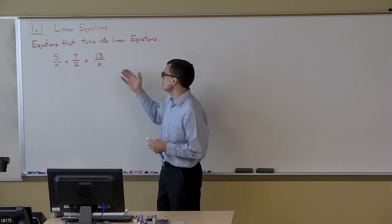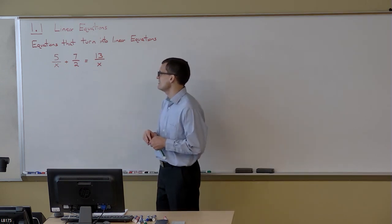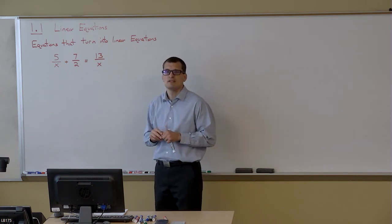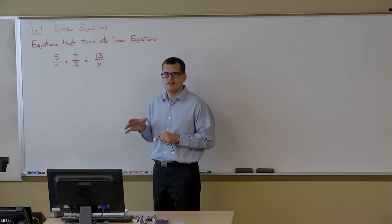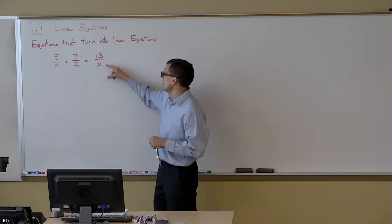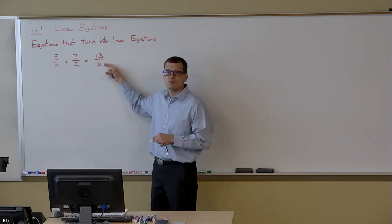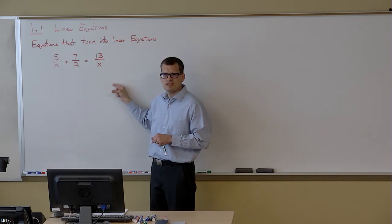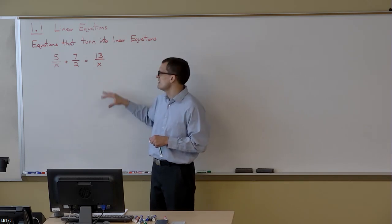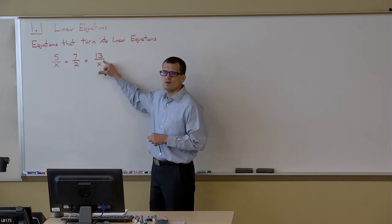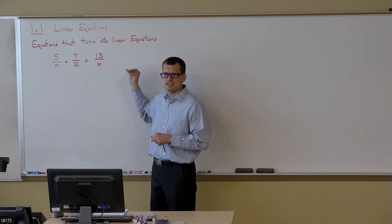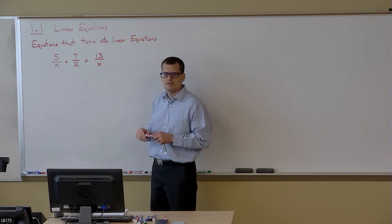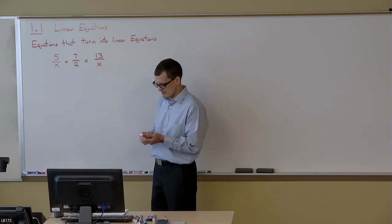You look at this and say it's a rational equation. It's kind of linear, kind of not, because in some sense if you rewrite this, 13 over x is the same as 13 times x to the negative 1. So this x in the denominator has a 1, but when you rewrite it, it actually has a negative 1. So it's not really linear.